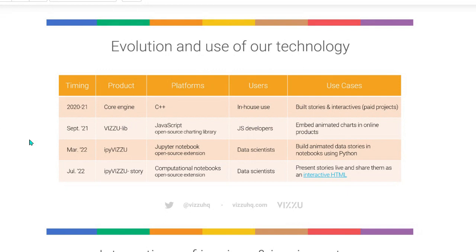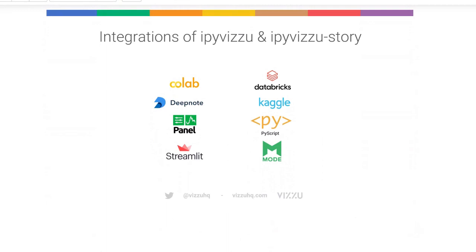This brought me here in March when we released the first tool called ipyvisu, which I'll introduce in a bit more detail shortly. It already enabled people to build animated charts and data stories in notebooks using Python. Then in July, when I was presenting at EuroPython, we released a new extension called ipyvisu story, which enables users to build, present, and share animated interactive presentations within Jupyter and similar computational notebooks.